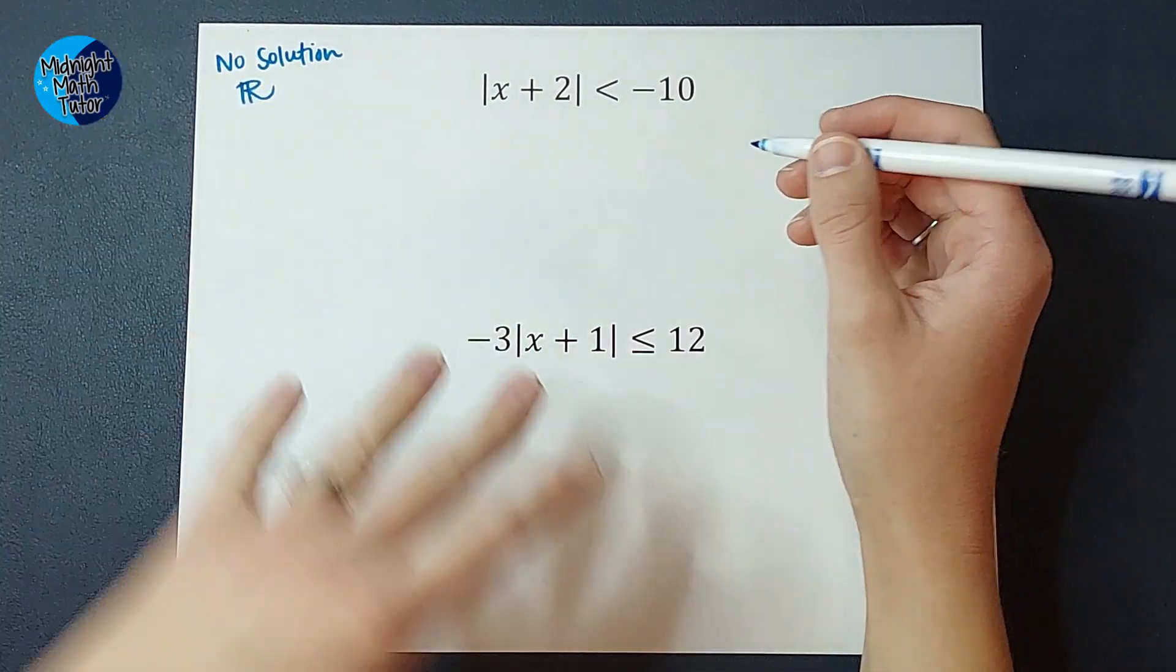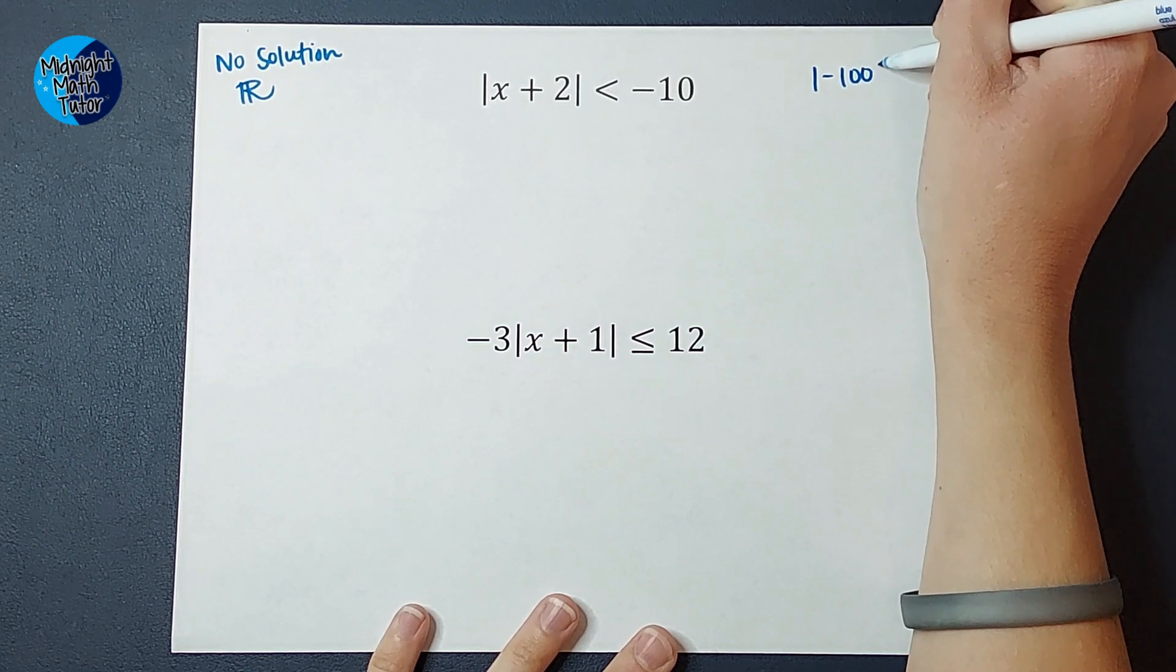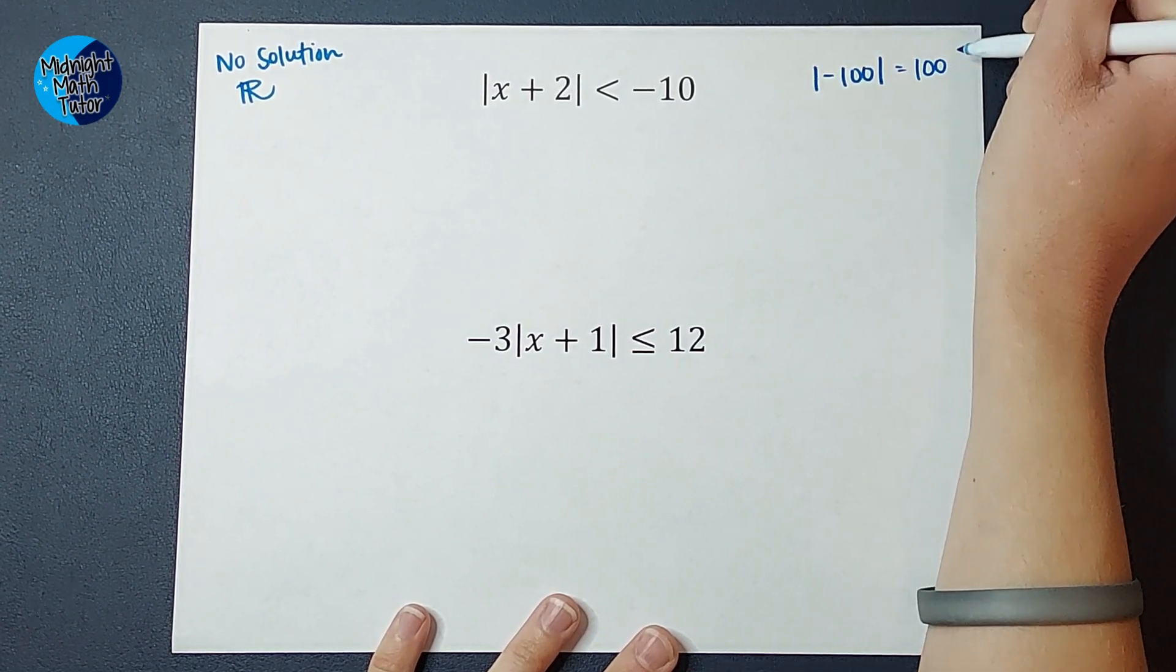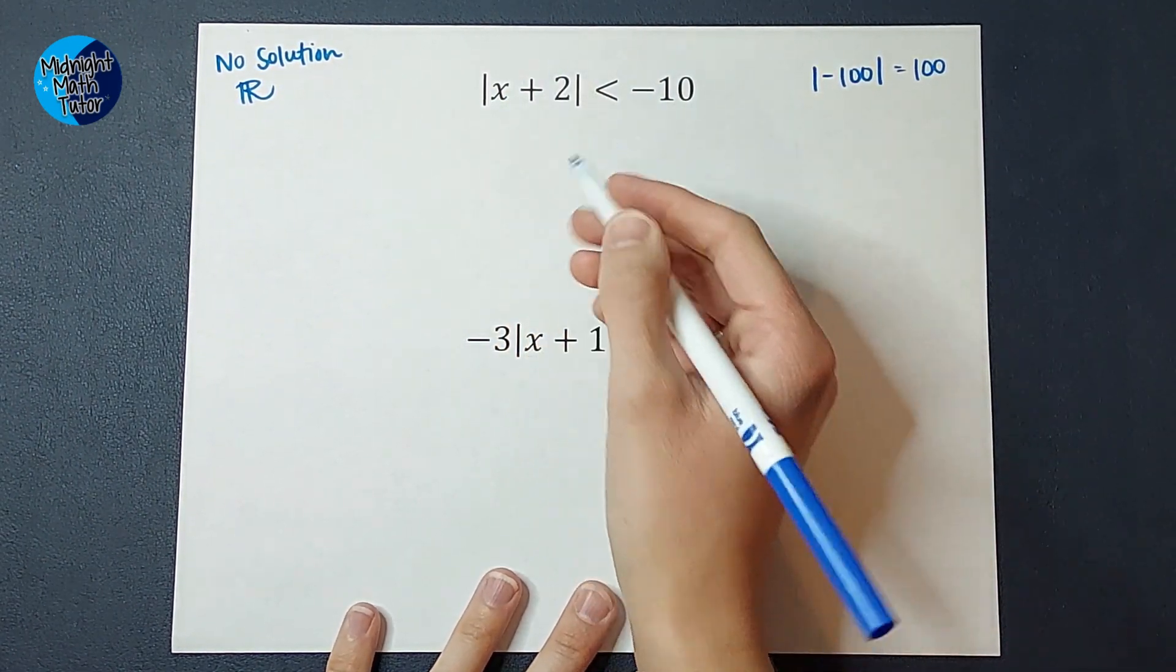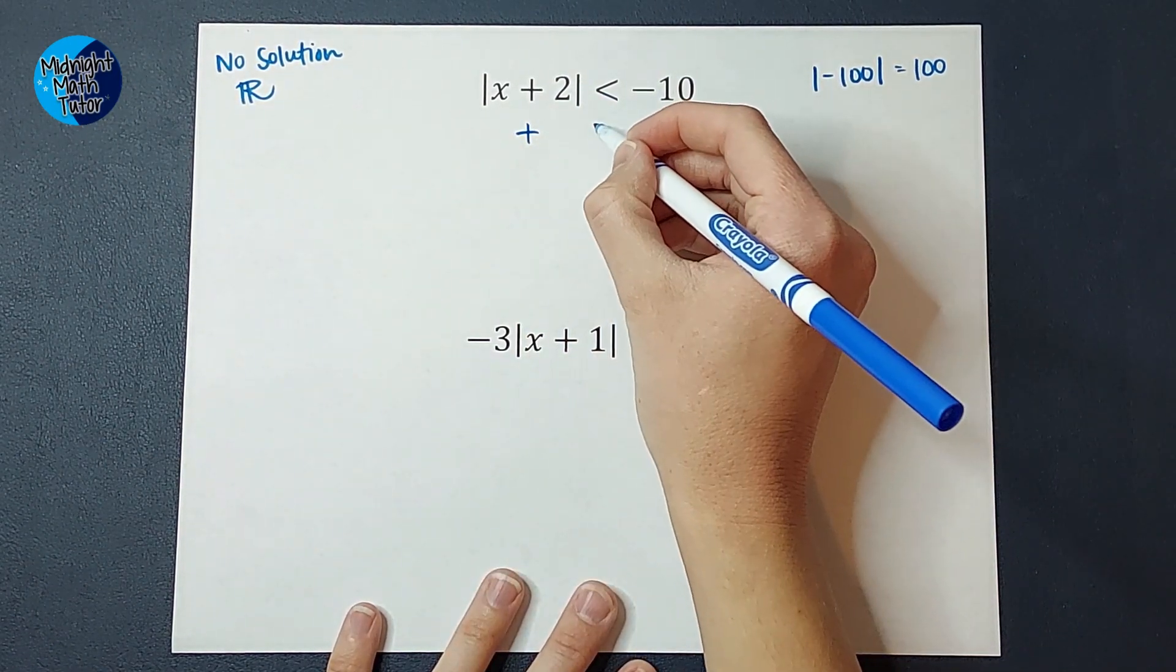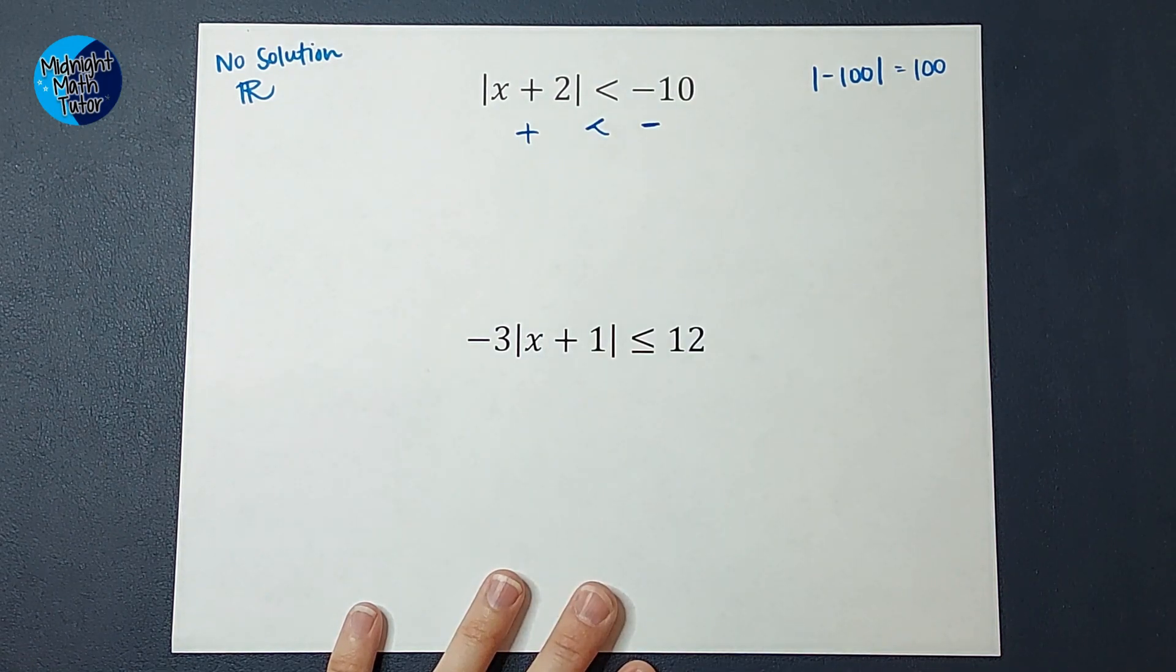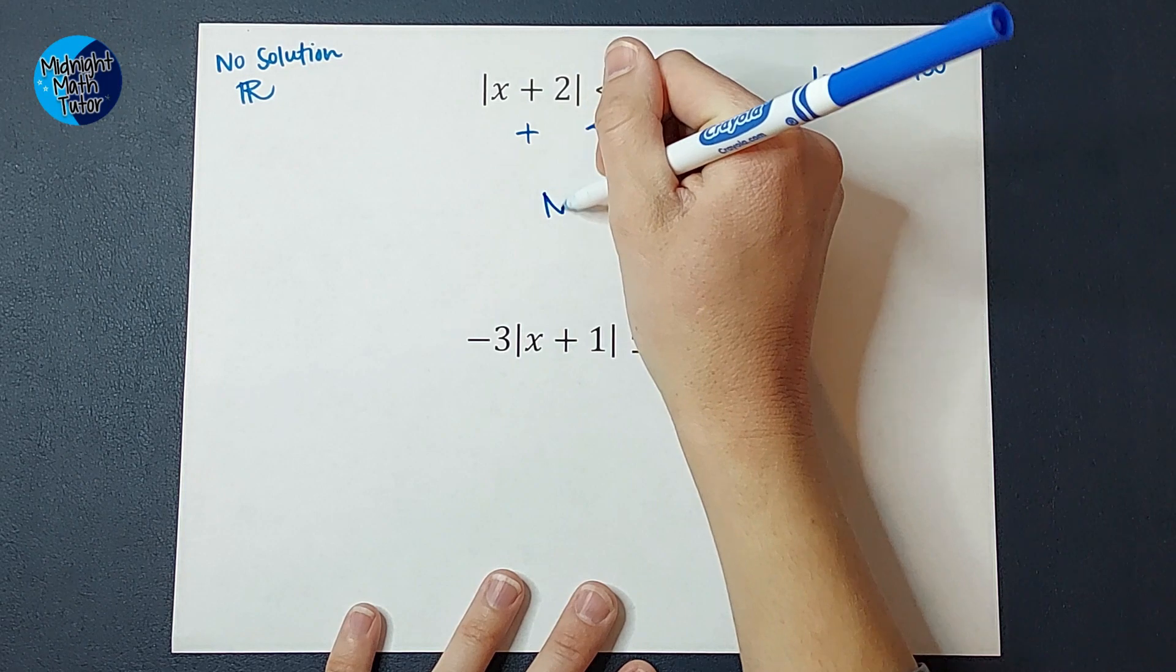Even if I plug in a negative number, if I have the absolute value of negative 100, well, the absolute value of negative 100 is 100. So it's positive. So whatever I plug in here will always come out positive. And will a positive number ever be less than a negative number? It won't. So this is a case where there is no solution.